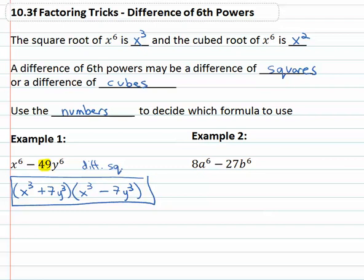Let's try another difference of sixth powers: eight a to the sixth minus twenty-seven b to the sixth. We've got two terms so I'm thinking tricks. We also have a sixth power, so it could be either a difference of squares or a difference of cubes. To decide we look at the numbers, eight and twenty-seven. Can we take the square root of those or can we take the cube root of those? With eight and twenty-seven we can take the cube root, so this is a difference of cubes.